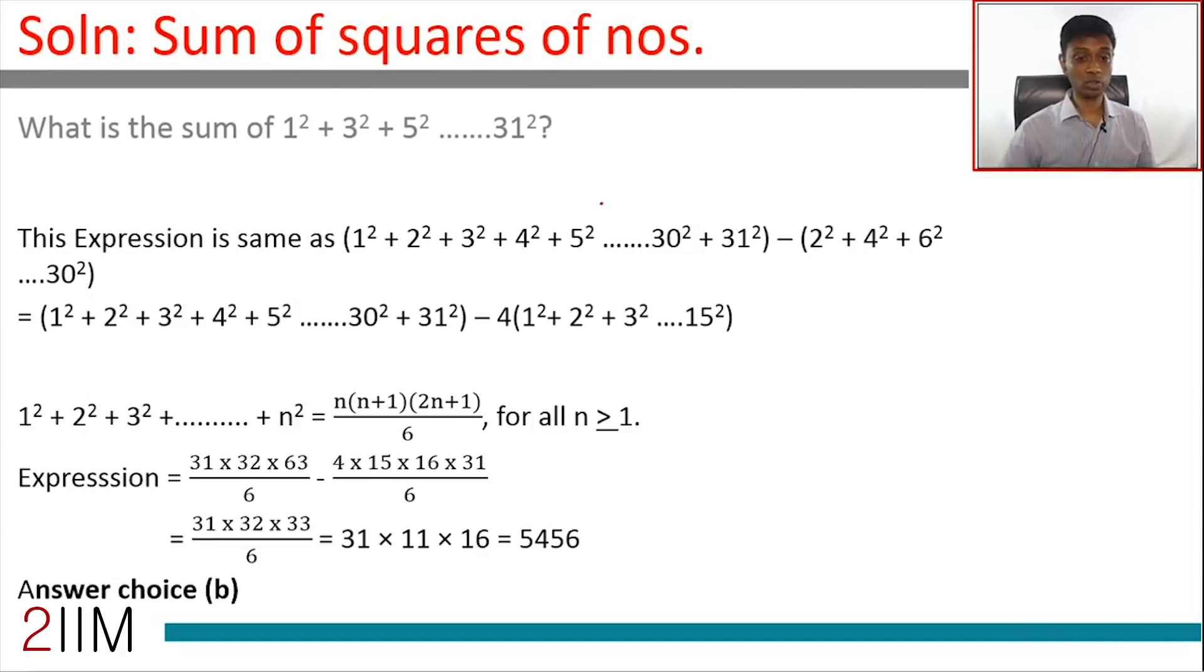1² + 2² + 3² all the way to 31²—this sum is 31 × 32 × 2n+1, which is 63, divided by 6, minus 4 times—here n is 15—15 × 16 × 31 / 6.